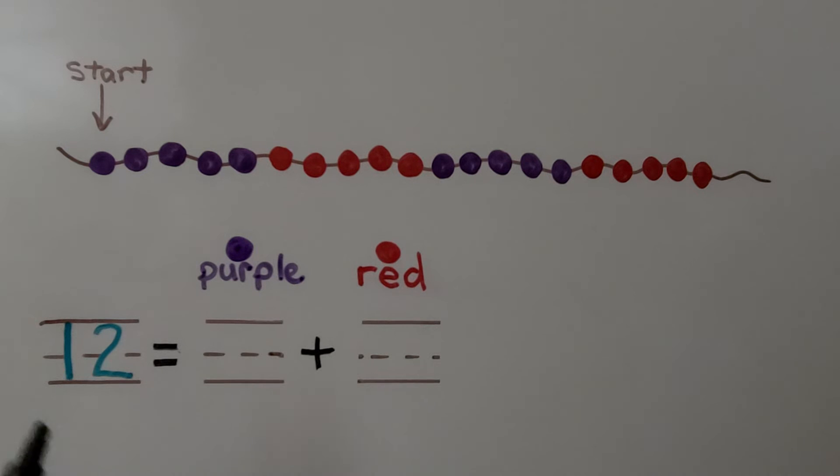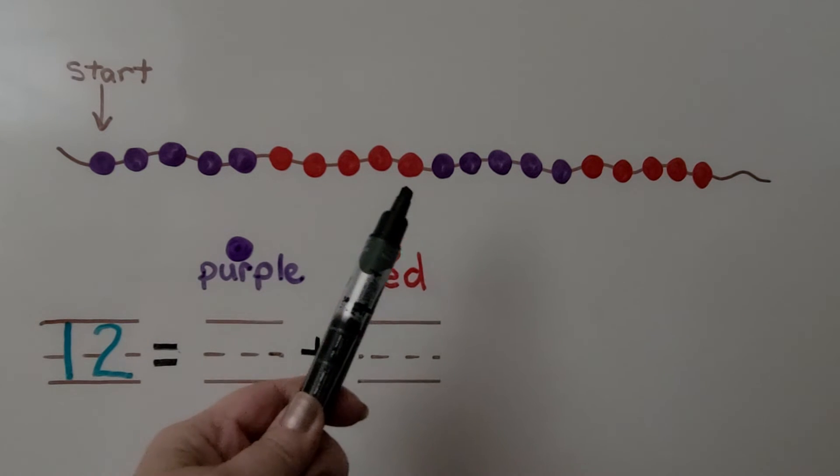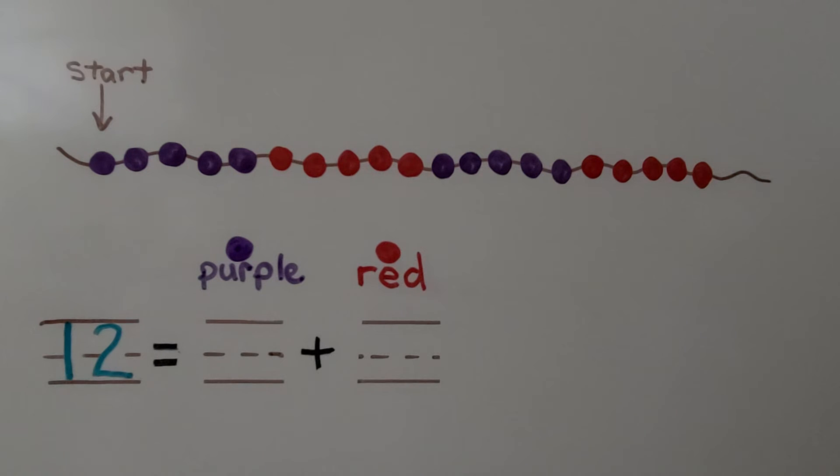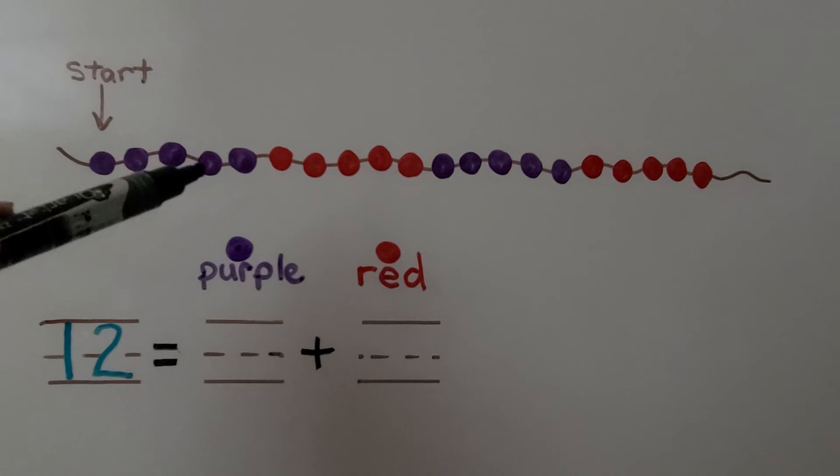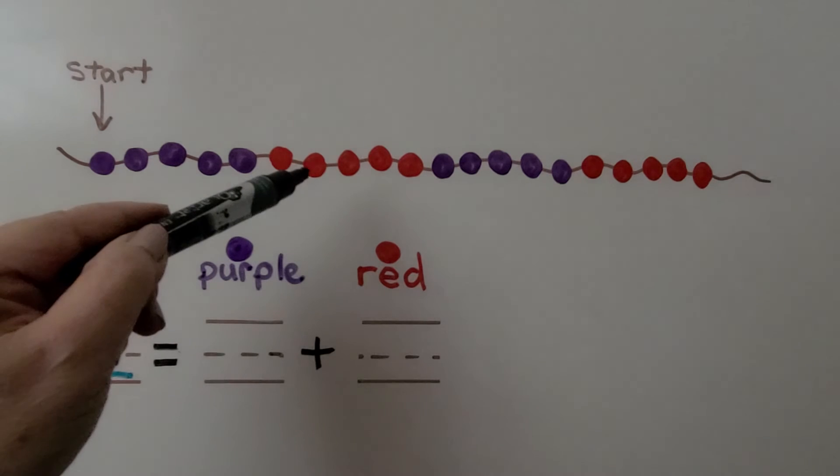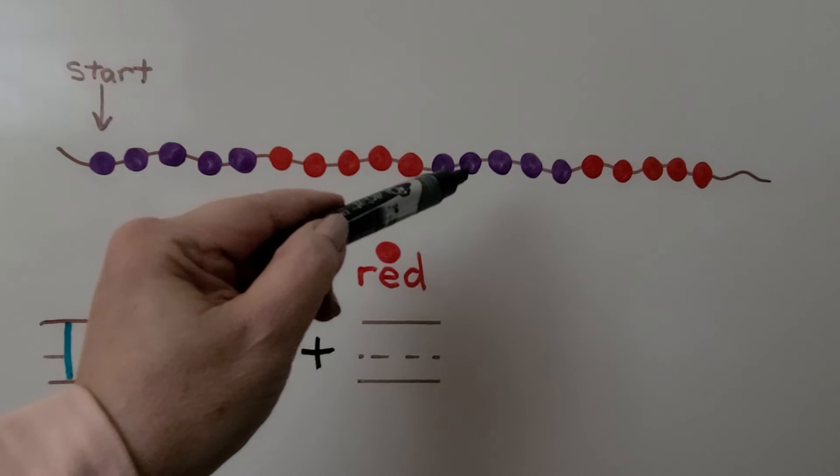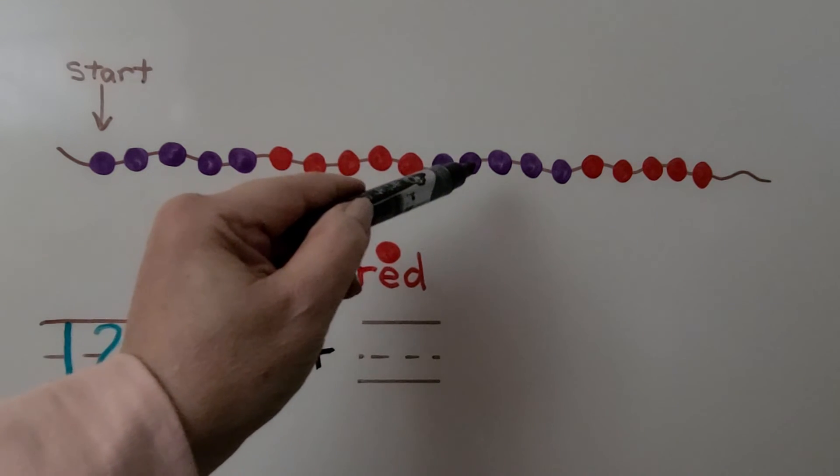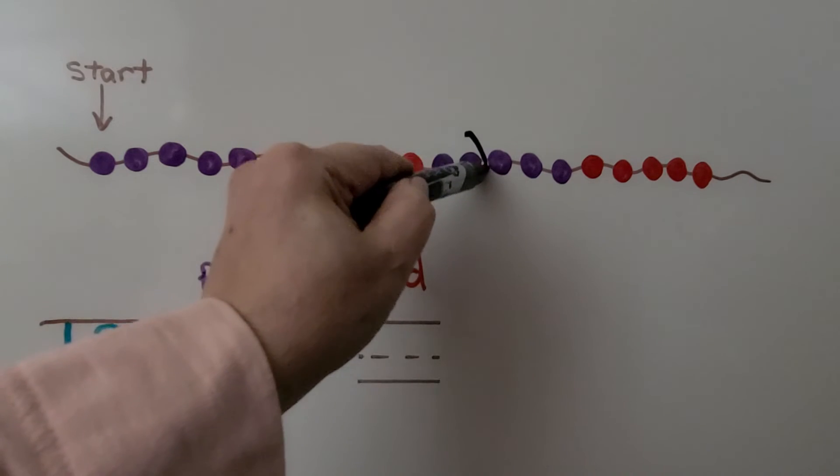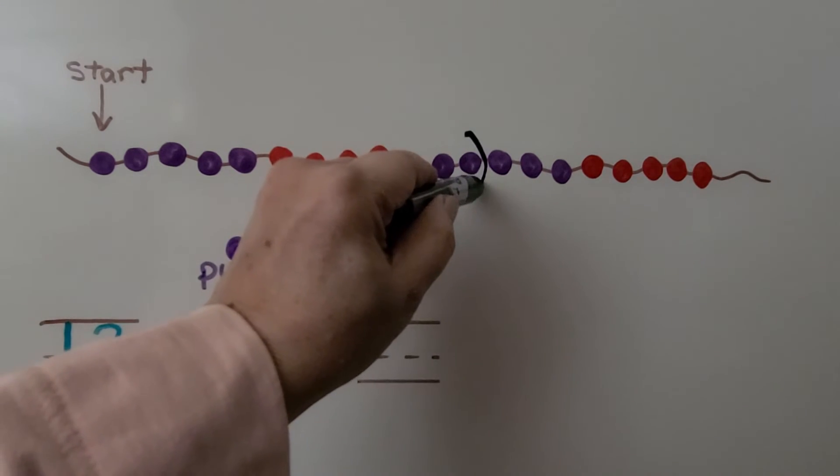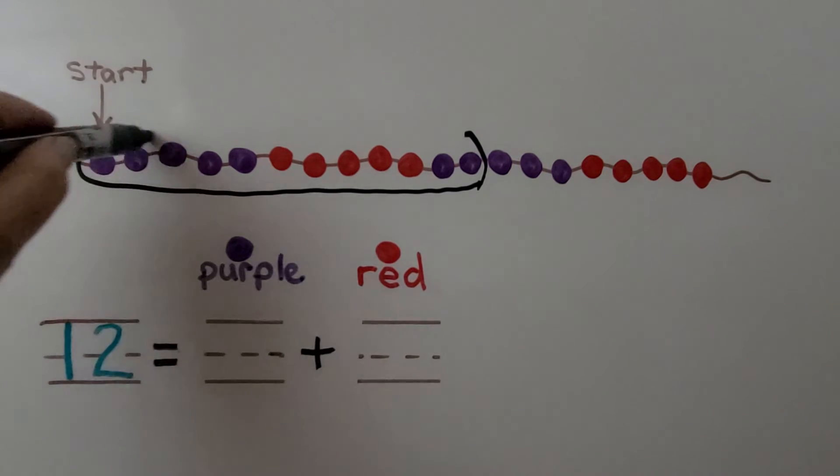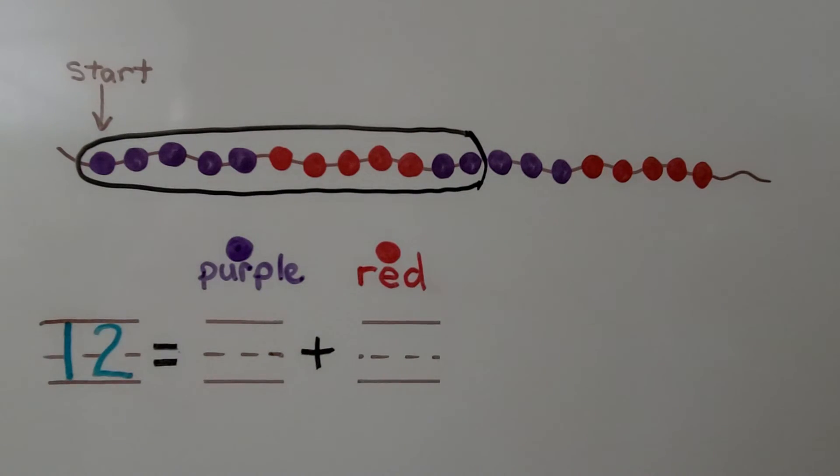Here we have some purple and some red beads on a string. Starting with the purple bead on the left, count 12 beads and circle them. So starting here, we have 1, 2, 3, 4, 5, 6, 7, 8, 9, 10, 11, 12. We're going to circle after this one, right like that. We know that's the last bead that should be circled. We've circled 12 beads.